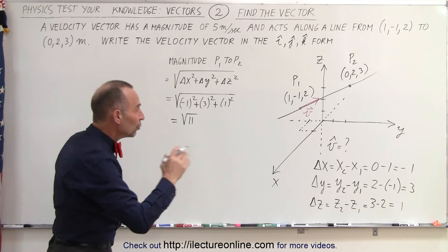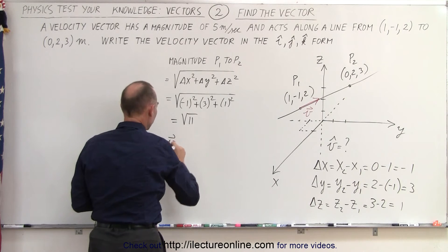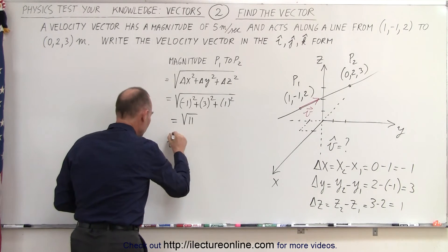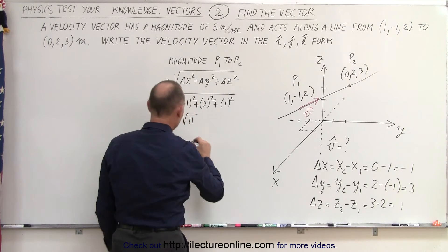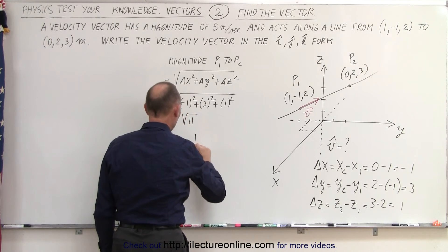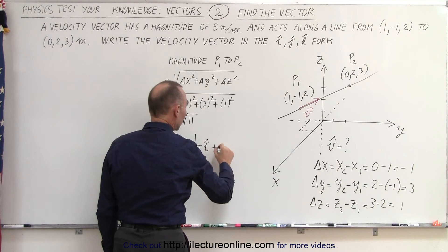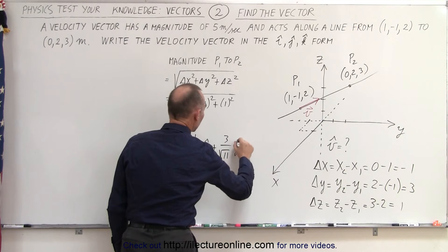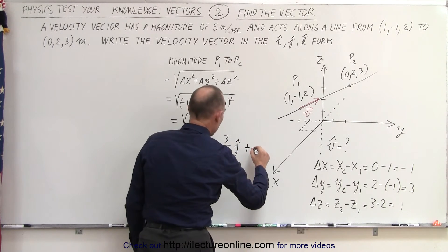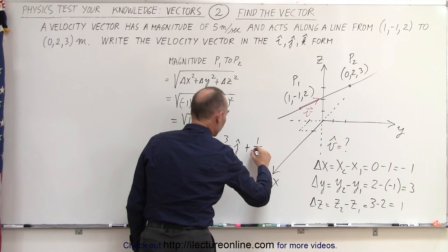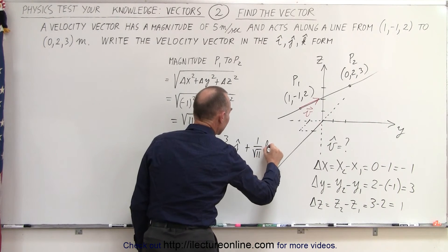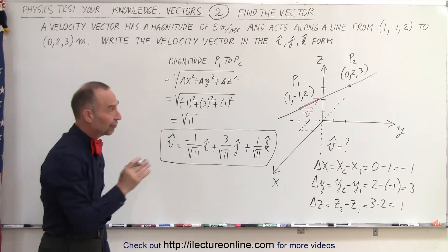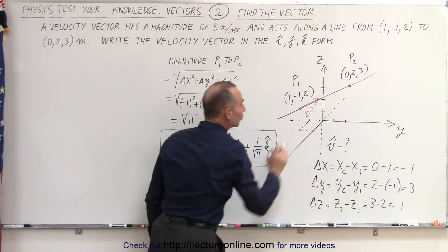If we now want to find the unit vector v, it is going to be equal to negative one divided by the square root of eleven in the i direction, plus three divided by the square root of eleven in the j direction, plus one over the square root of eleven in the k direction. So now we have the unit vector v in the direction from point one to point two.